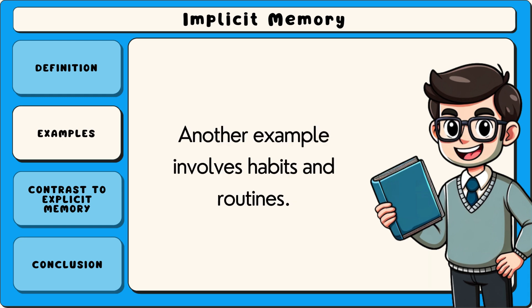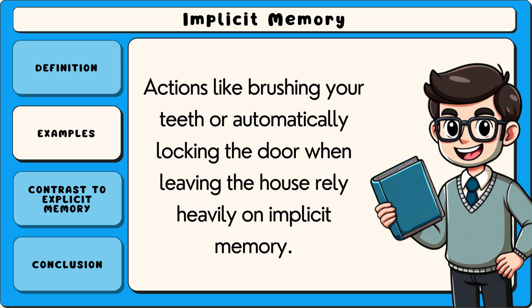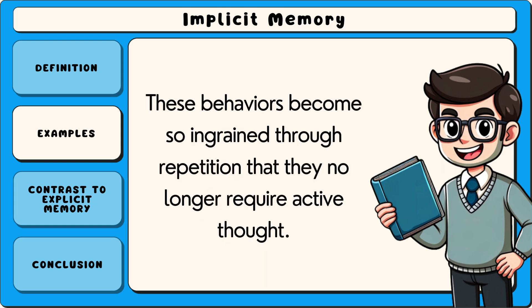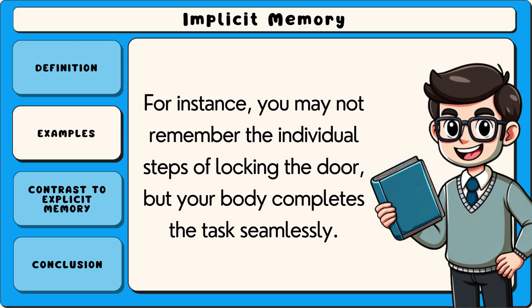Another example involves habits and routines. Actions like brushing your teeth or automatically locking the door when leaving the house rely heavily on implicit memory. These behaviors become so ingrained through repetition that they no longer require active thought. For instance, you may not remember the individual steps of locking the door, but your body completes the task seamlessly.